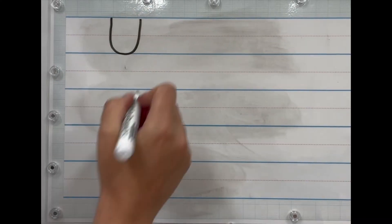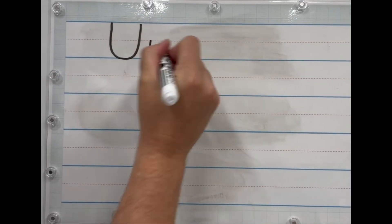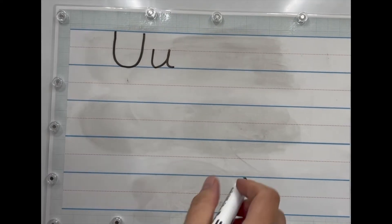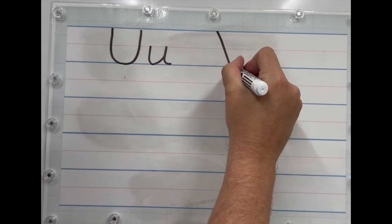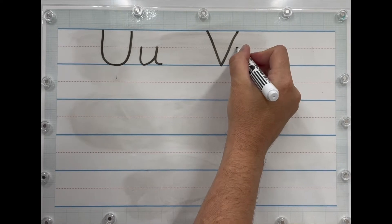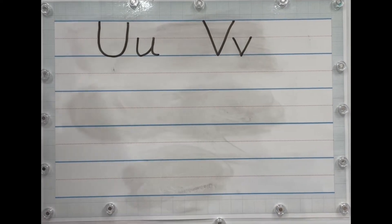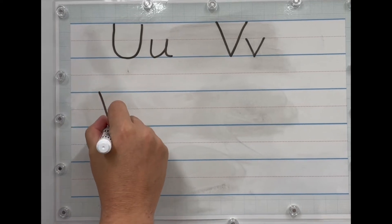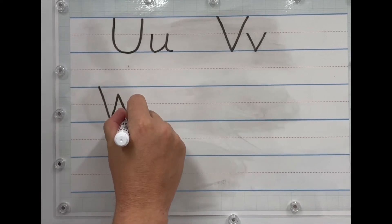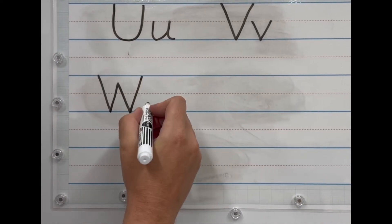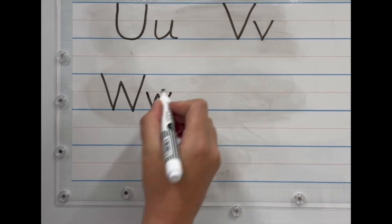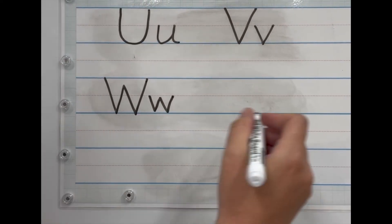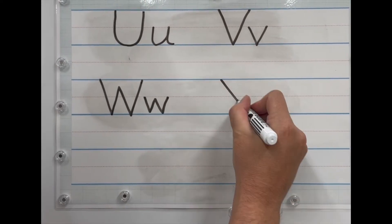U: big U one and small U one two. Next V: big V one two, small V one two. Next is W: big W one two three four and small W one two three four. Next X: big X one